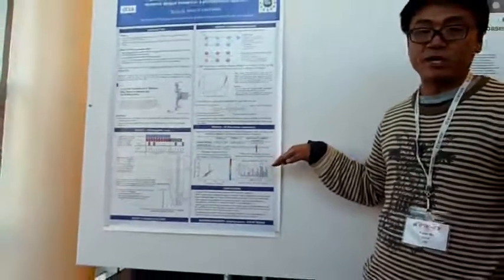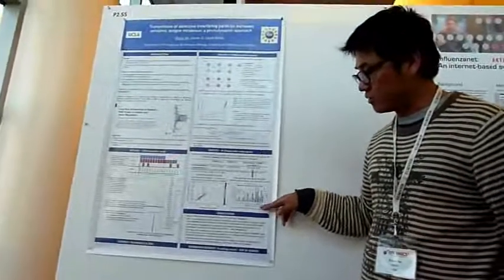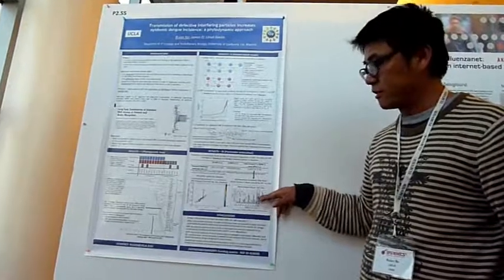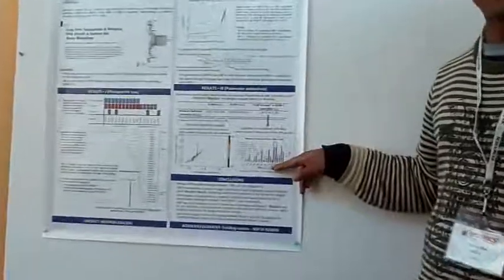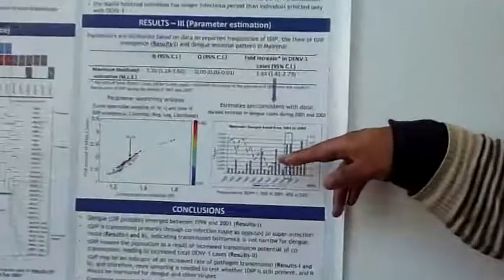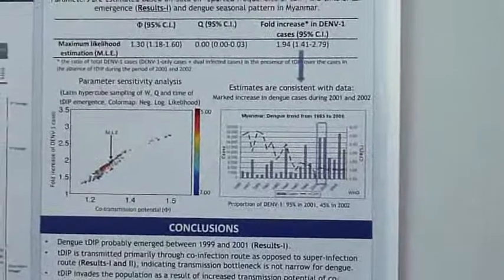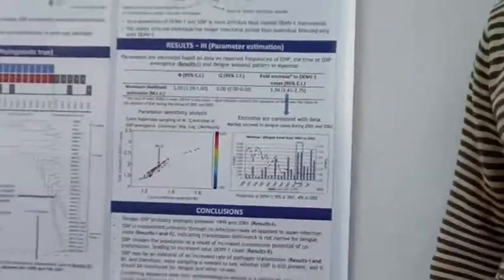If we compare our estimations with the case reports from WHO, as you can see here, there is a marked increase during 2001-2002, which is consistent with our estimate. Therefore, we conclude the transmission of defective interfering particle increases dengue incidence.